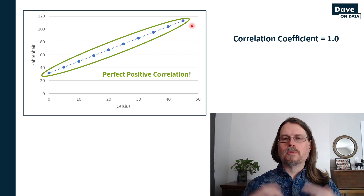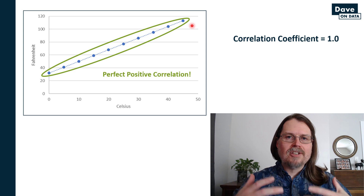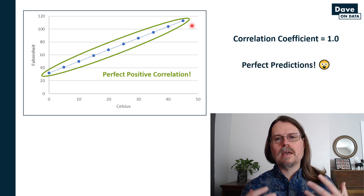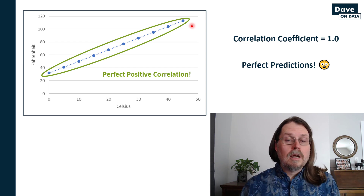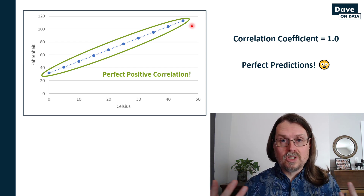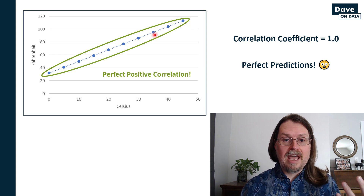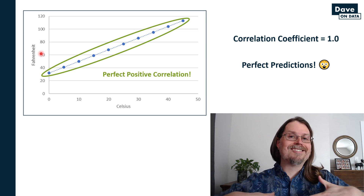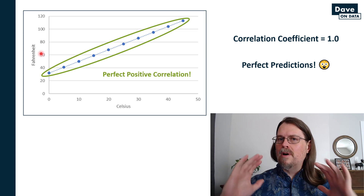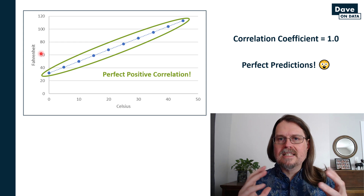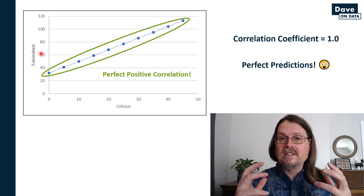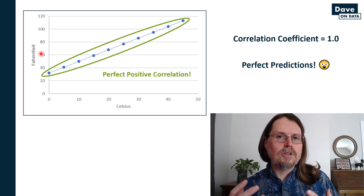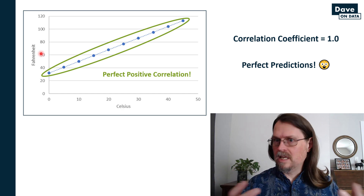In practical terms, what does it mean when you see this as you're analyzing data? What it tells you is that you can make perfect predictions based on the data. That shouldn't come as a shock — if you know the degrees Celsius, you can perfectly predict the degrees Fahrenheit. There's even an equation for it. Perfect positive correlation means the line goes from the lower left to the upper right, and you can make perfect predictions based on the data.